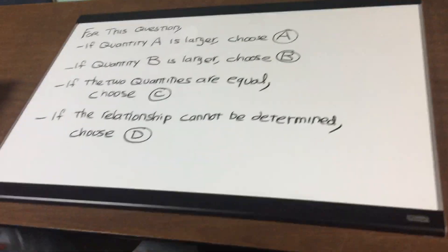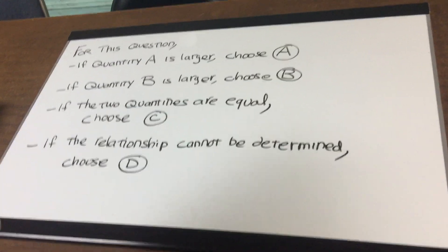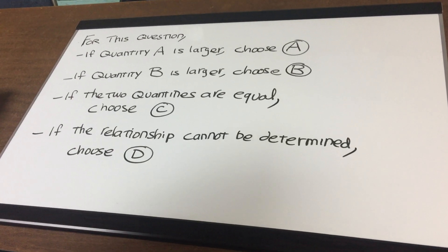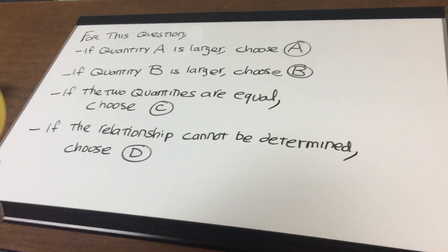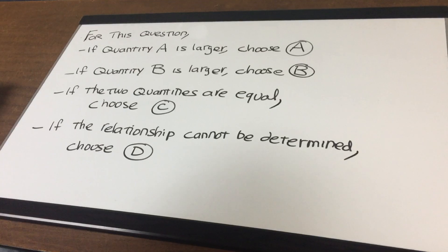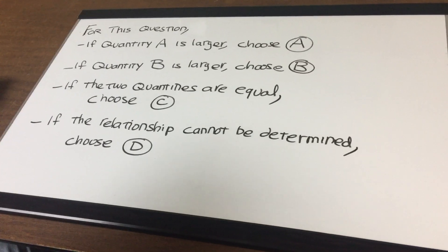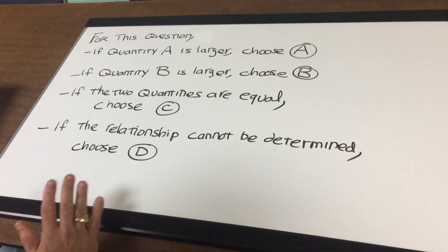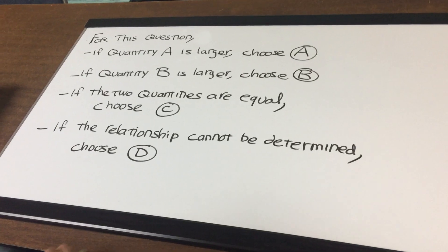For this type of question we're going to be choosing A if quantity A is larger, B if quantity B is larger, C if the two quantities are equal, and D if the relationship cannot be determined.